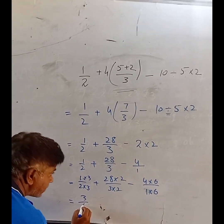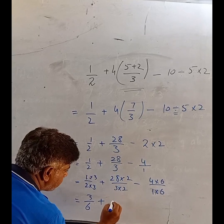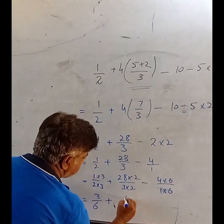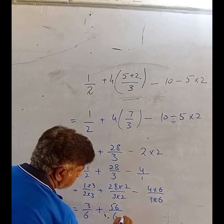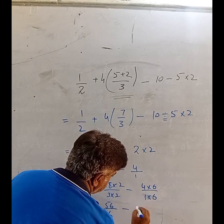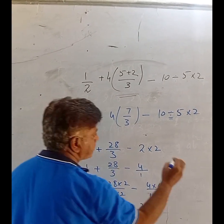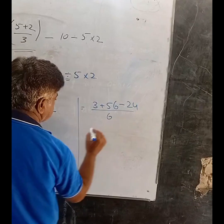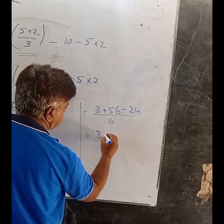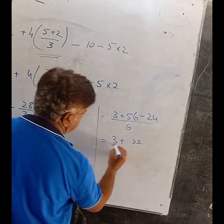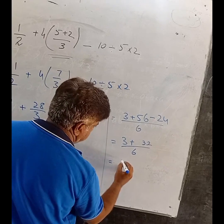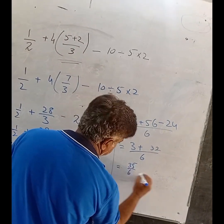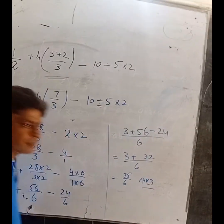3 over 6 equals 1/2, plus 28 divided by 3 equals 56/6, minus 24. So 6, 3 plus 56 minus 24. 3 plus 6 equals 9... 35 plus 6 minus 24... equals 35. The final answer is 35/6.